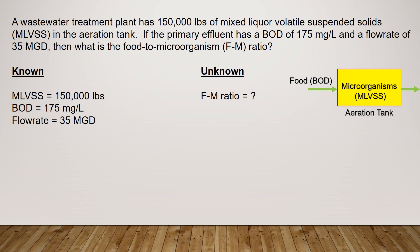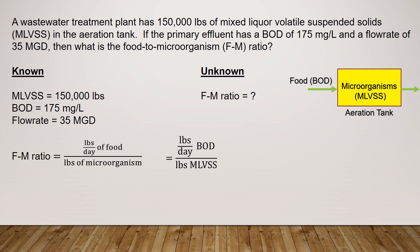Next, write down the formula you need to solve this problem — the FM ratio. The FM ratio is simply the pounds per day of food divided by pounds of microorganism. You can also rewrite this as pounds per day of BOD divided by pounds of MLVSS.